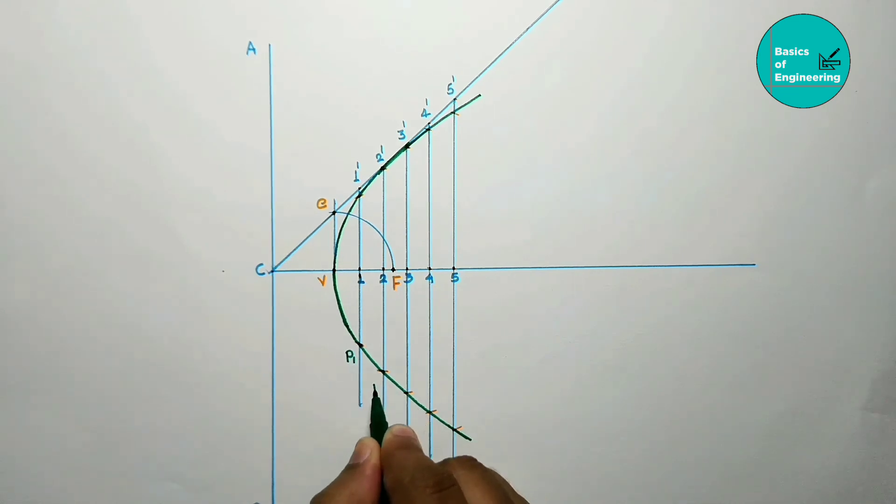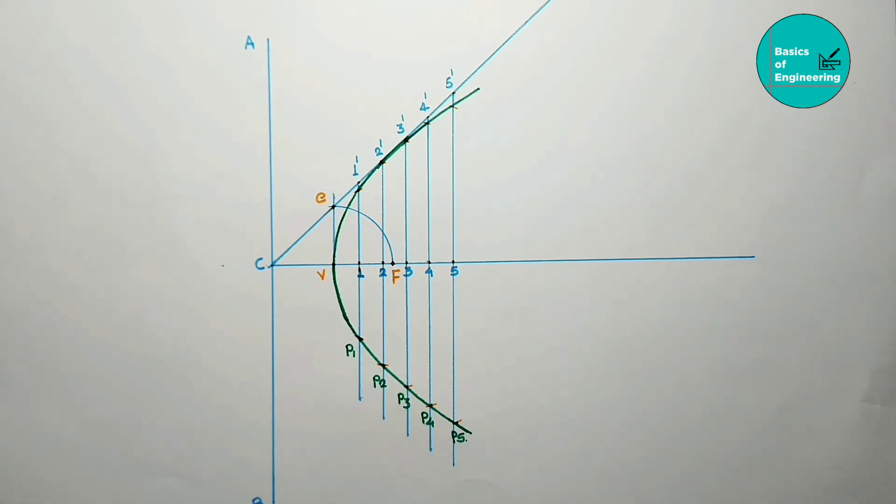P1, P2, P3, P4, P5. So this is our parabola by directrix and focus method.